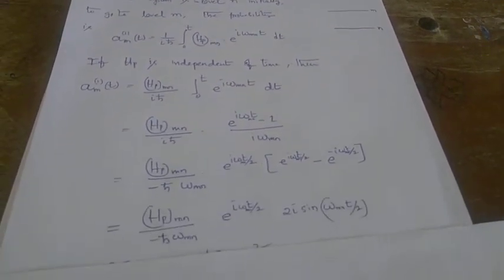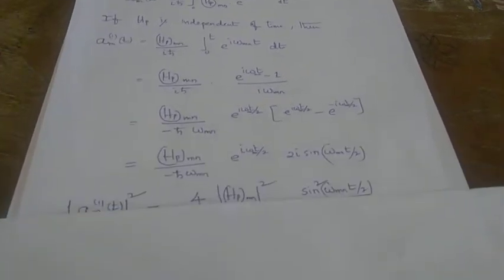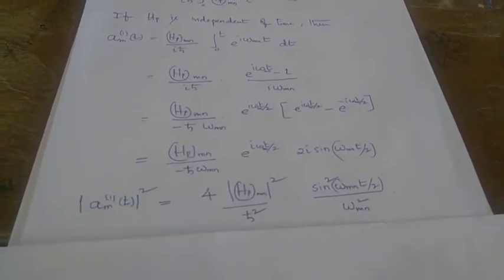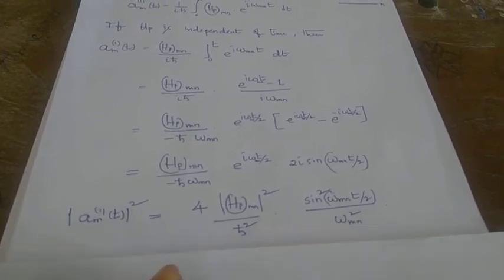But that we can write as 2i sin(omega_mn t over 2). So the probability of transition between the levels n and m is given by this expression here.